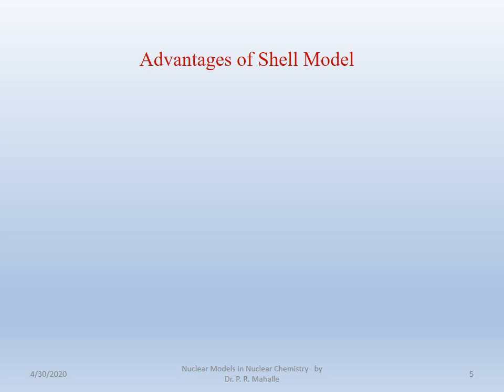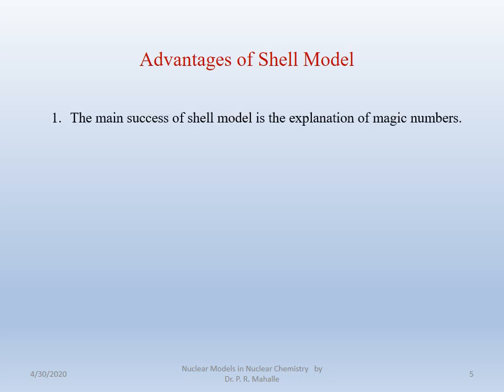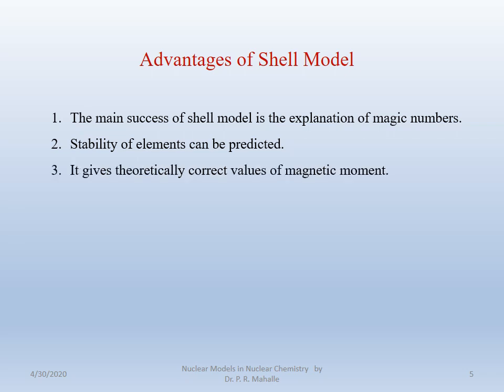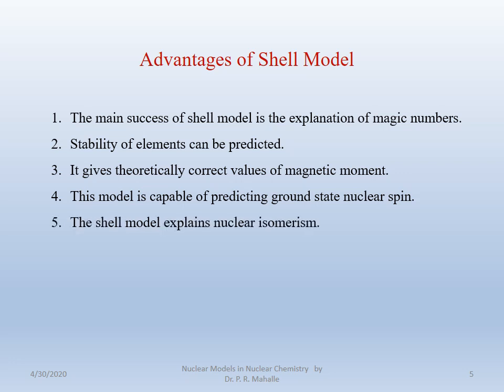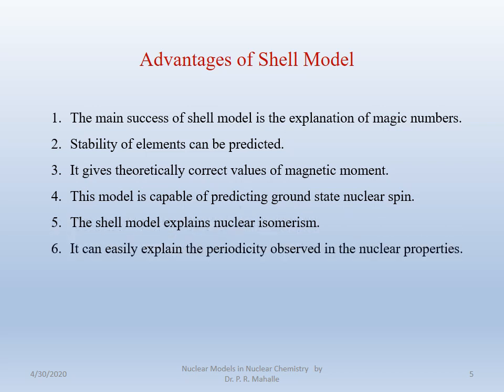We will see the advantages of the shell model. Number 1, the main success of the shell model is the explanation of the magic numbers — the shell model very well explains their existence. Number 2, the stability of the elements can be predicted. Next, it gives theoretically correct values of the magnetic moment. The shell model is capable of predicting the ground state nuclear spin. It also explains the nuclear isomerism and can easily explain the periodicity observed in the nuclear properties.